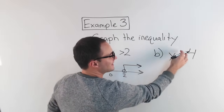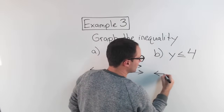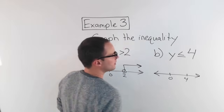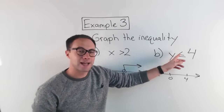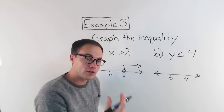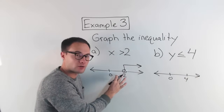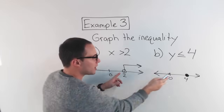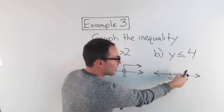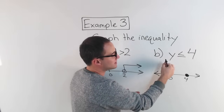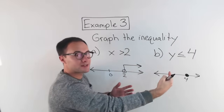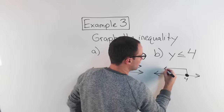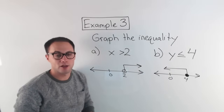Let's look at b: y is less than or equal to 4. Again, start with a number line, marking 0 and 4. This is less than or equal to, so 4 is also a solution — I'm not going to have an open circle; I'm going to have a closed dot, placed right on the number line. Then, y is less than or equal to 4, so all numbers less than 4 are to the left. My arrow goes to the left. And there's the graph of that inequality.